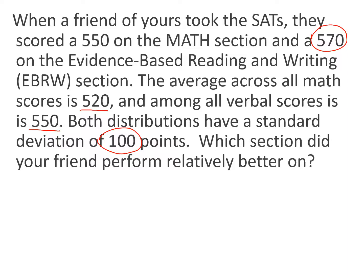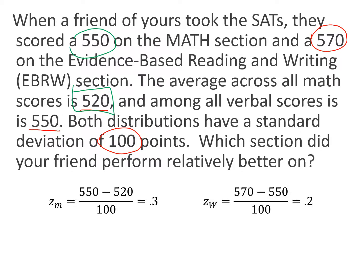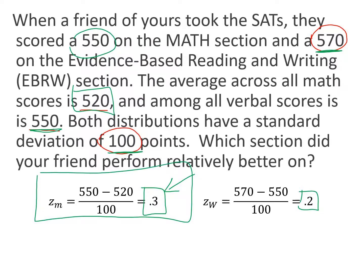For the math section, we take that math data value, 550, subtract the mean of 520, and divide by the standard deviation. We get a z-score of 0.3. For writing, 570 minus the mean of 550, divide by 100, and we get a z-score of 0.2. This tells us how far we are from the mean measured in standard deviations. The math score is actually farther from the mean — it's a better score relative to the other test takers — despite the fact that 550 is less than 570.